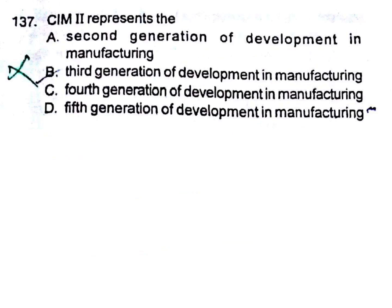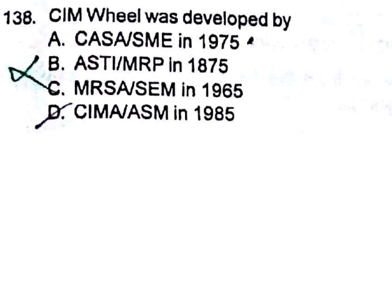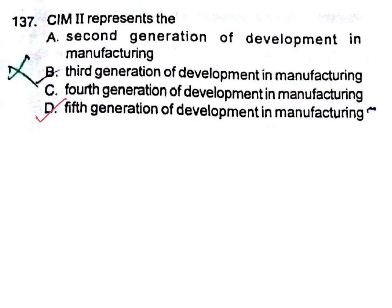CIM II represents: A) second generation of development in manufacturing, B) third generation, C) fourth generation, D) fifth generation. The CIM wheel was developed by ACASA/SME. The answer is A — second generation. This type of question you will not get in normal books; they are asking deep questions for industrial engineering.